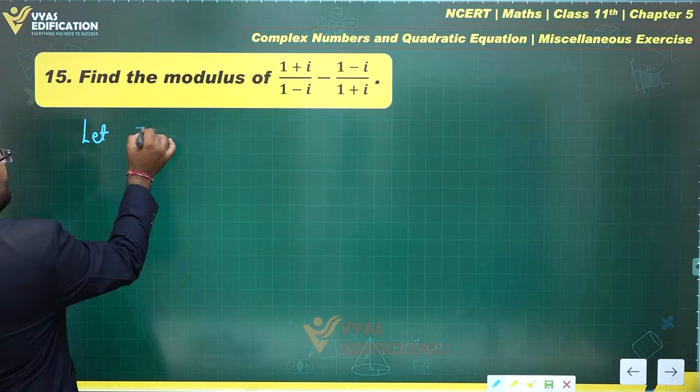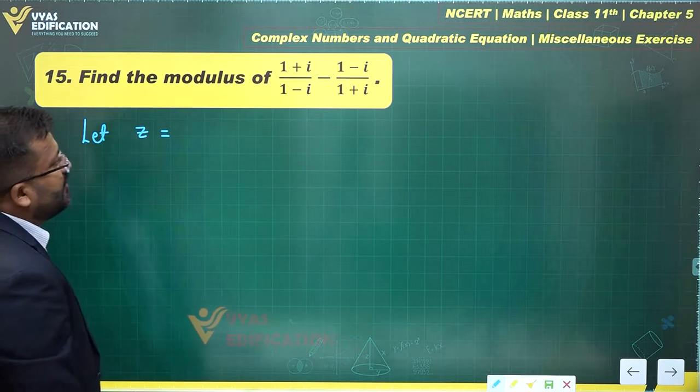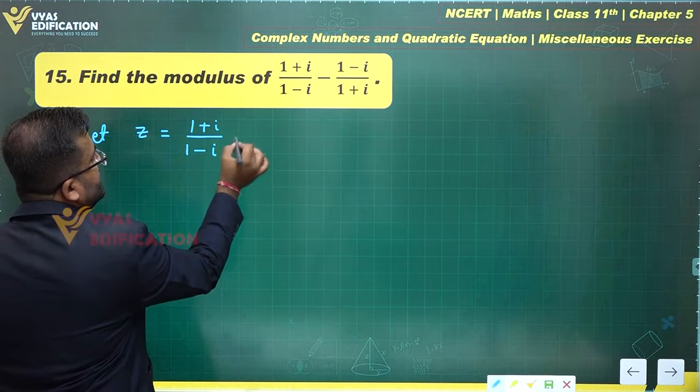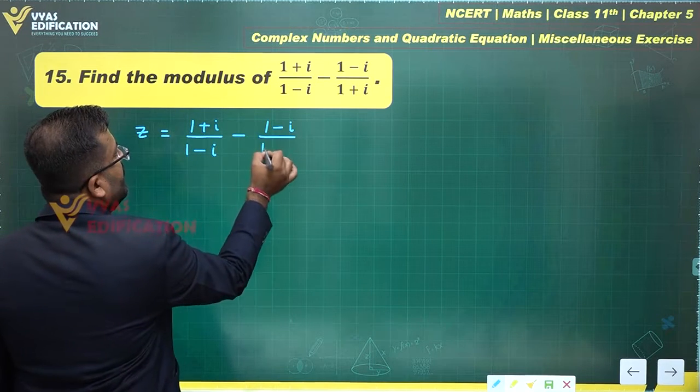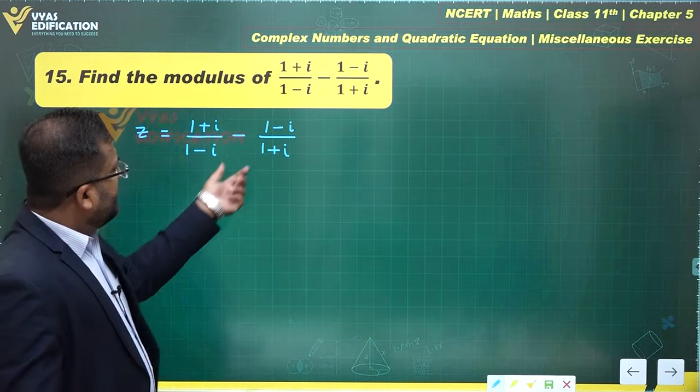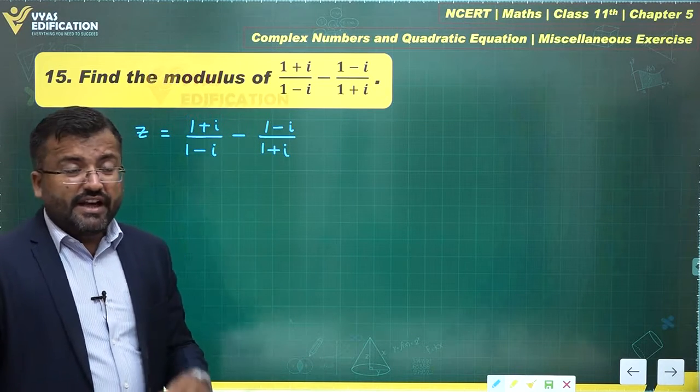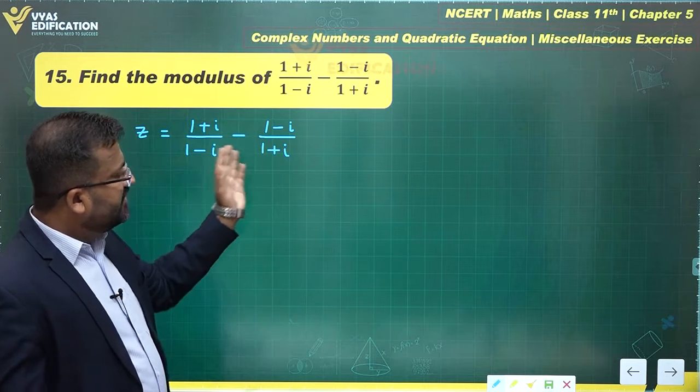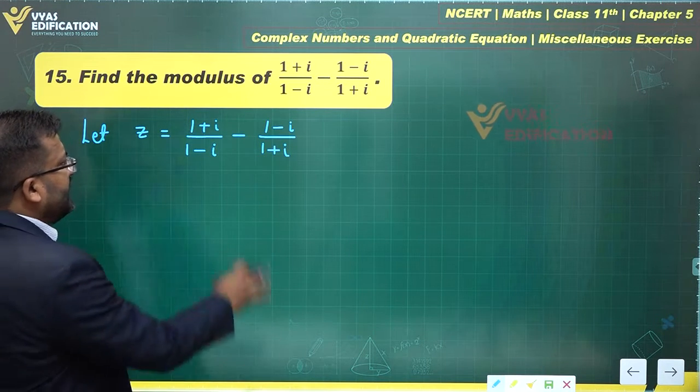For finding the modulus, let us take it as z equals (1+i)/(1-i) minus (1-i)/(1+i). Simplifying this separately and this separately does not seem a good idea because on taking the LCM you get conjugates getting multiplied together. Had they not been conjugates we would have thought in another direction maybe, but right now we can move directly by taking the LCM.